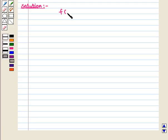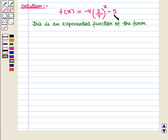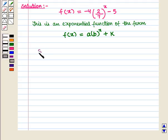We are given the function f of x is equal to minus 4 into 2 upon 7, whole raised to the power x minus 5. This is an exponential function of the form f of x is equal to a into b raised to the power x plus k. Here the value of a is minus 4 and the value of k is minus 5. We have to find its domain and range.